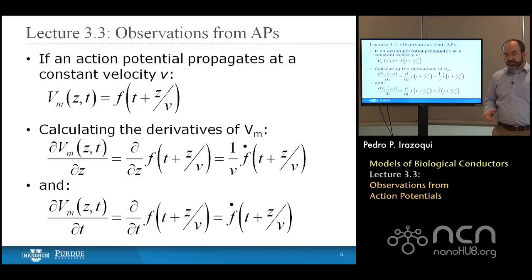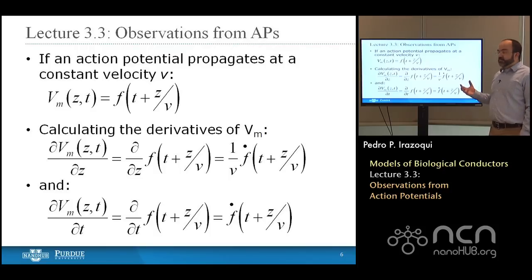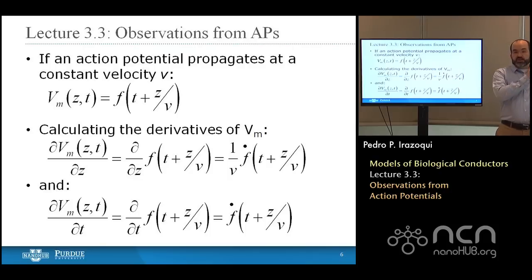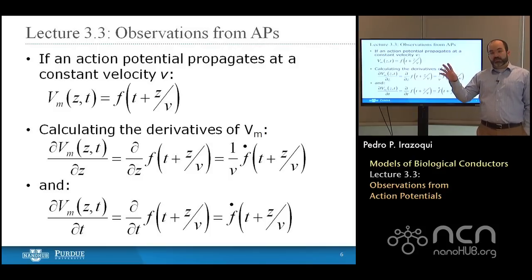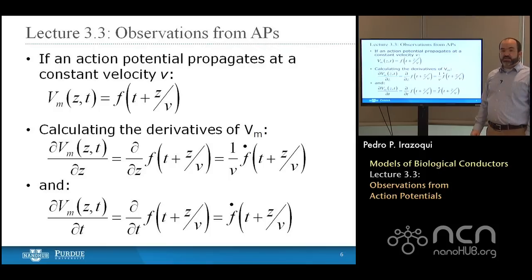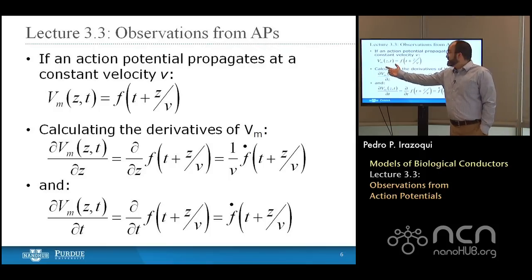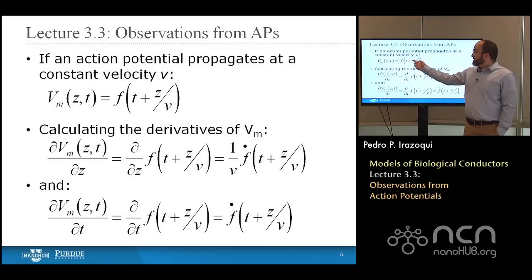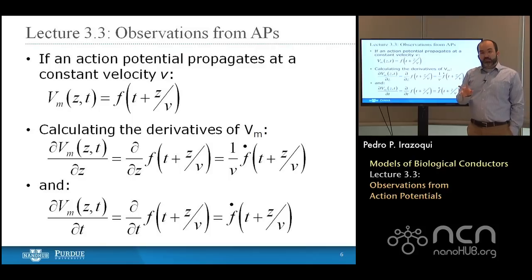If an action potential propagates at a constant velocity V, how do we describe the relationship between the membrane voltage, the current outside the cell, and the membrane current per unit length? We know the second derivative of the membrane voltage is the current in the membrane per unit length, and the first derivative is the current outside the cell. With constant velocity V, we can describe the membrane voltage as a function of T plus Z over V — so time and space become related and are not independent of one another.